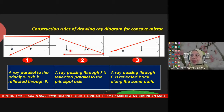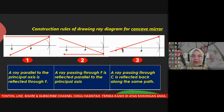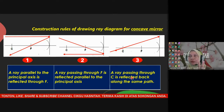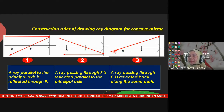Rule 3 for concave mirror: a light ray passing through the center of curvature C reflects back along the same path. So these are the three rules for drawing ray diagrams for concave mirrors. Rules 1 and 2 are opposite to each other, and Rule 3 is simple — passing through C, it reflects back along the same path.